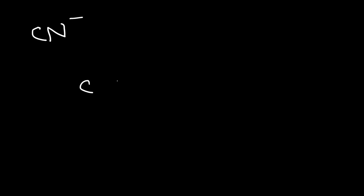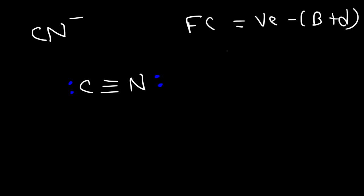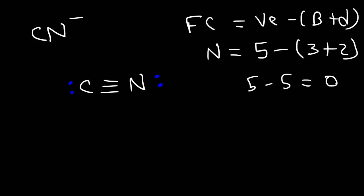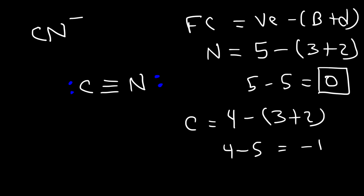Let's look at the cyanide ion. Which element bears the negative charge — carbon or nitrogen? Use formal charge to find out. In the Lewis structure of the cyanide ion, both carbon and nitrogen contain a lone pair. Nitrogen has five valence electrons, three bonds, and two dots — so five minus five is zero, meaning nitrogen is neutral. Carbon has four valence electrons but also three bonds and two dots — so it's four minus five, which is negative one. Carbon bears the negative charge, not nitrogen.